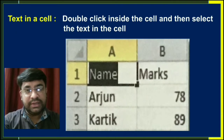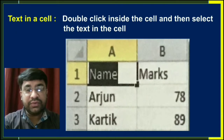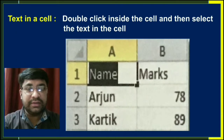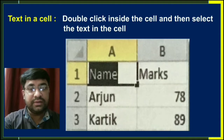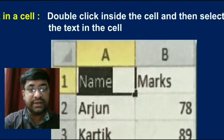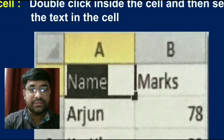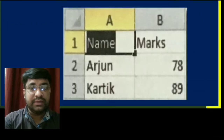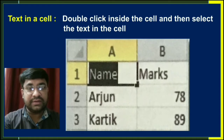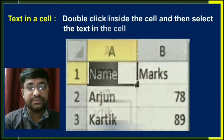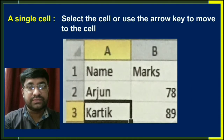To select text in a cell, you have to double-click inside the cell and then select the text in the cell. You can see that in the diagram. This is a very simple step to select text in a cell.